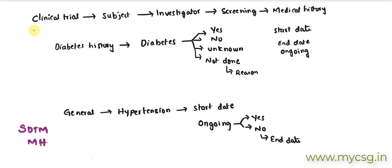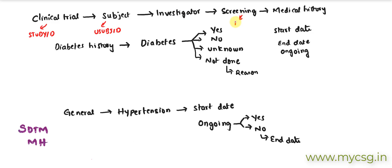Every clinical trial is identified with an identification number stored in a variable called STUDYID. The subject number is stored in a variable called USUBJID. We do not store investigator details in the SDTM MH domain — those are stored at the subject level in the DM domain. The date of screening on which the medical history examination is performed is captured in a variable called MHDTC.